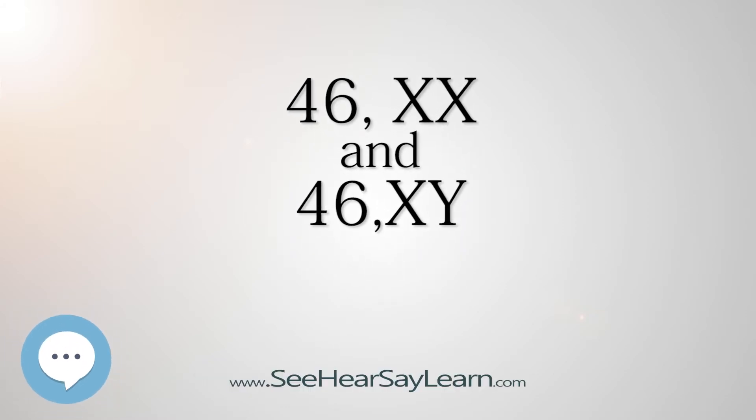46XX/46XY is a chimeric genetic disorder caused by having two distinct cell populations within the body. The chimerism arises in utero from the combination of an XX zygote and an XY zygote, which otherwise would have developed into twins, into a single embryo. It is not to be confused with mosaicism and hybridism.